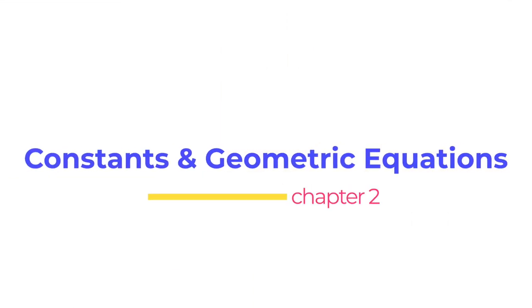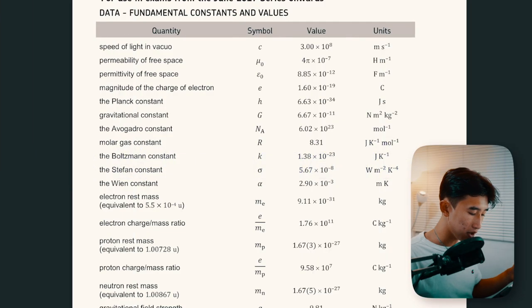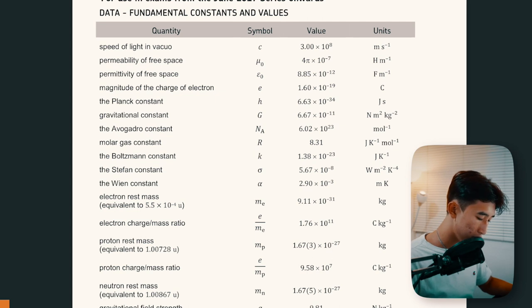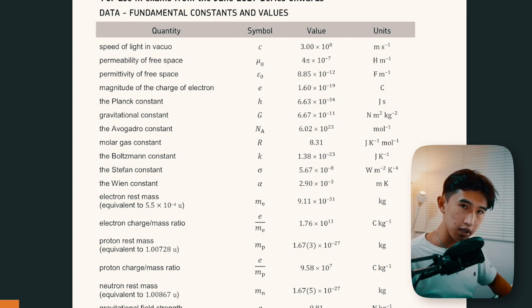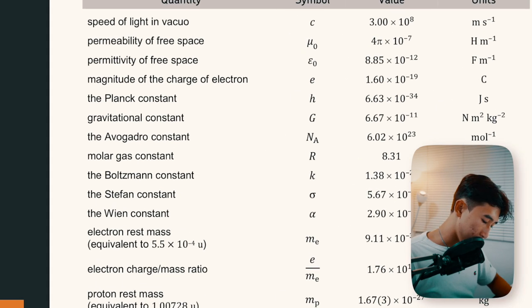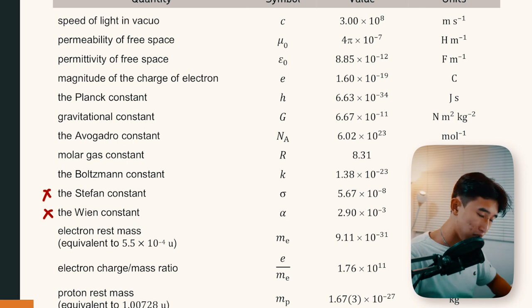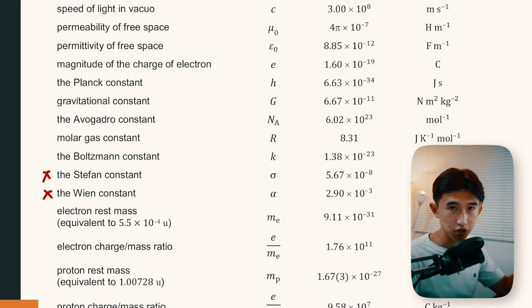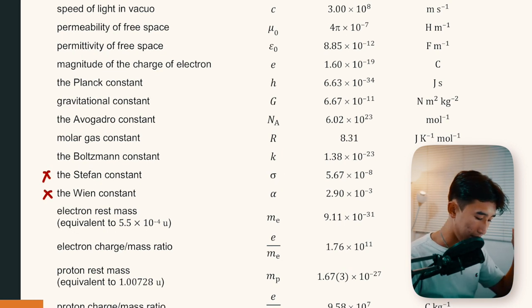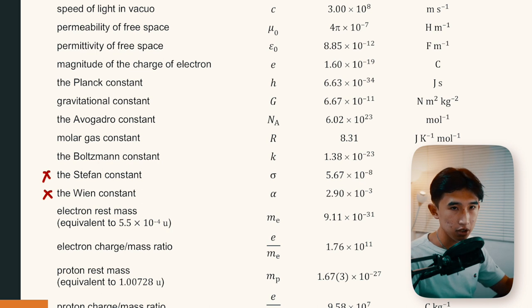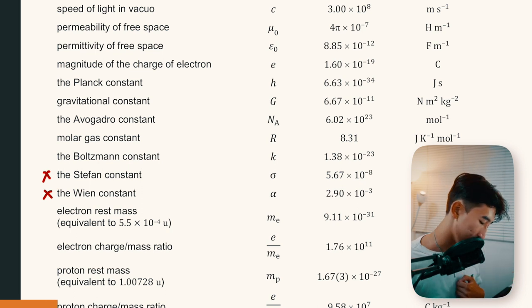From the first page you have a series of constants, which we'll go through as we use them in the formulas. It's important to note that a few constants are not used in the core modules — the Stefan constant and the Wien constant are only used for the astrophysics module, so if you're confused about why they're there, that's the reason.